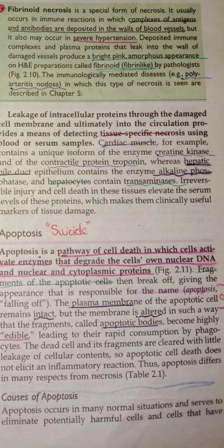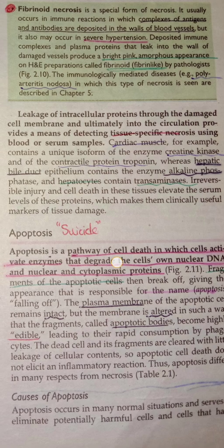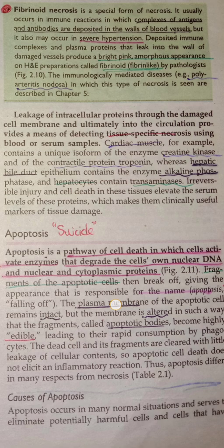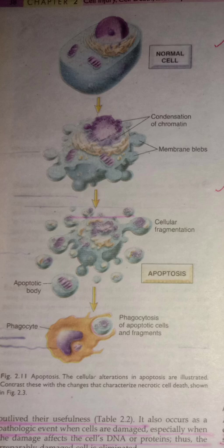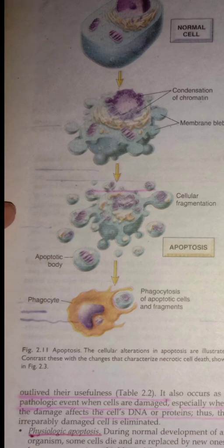Cardiac enzymes specific for injury include creatine kinase. For hepatic bile duct injury, the specific enzyme is alkaline phosphatase. Hepatocyte damage is detected with transaminases — AST and ALT, as studied in biochemistry. Apoptosis is suicidal cell death — the pathway in which cells activate enzymes that degrade the cell's own nuclear DNA and cytoplasmic proteins. The plasma membrane is attacked, apoptotic bodies are formed, and these are phagocytosed. The process includes mitochondrial condensation, membranous blebs, and formation of apoptotic bodies that are further phagocytosed.